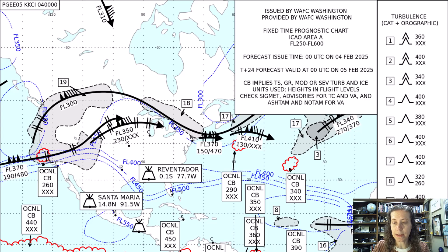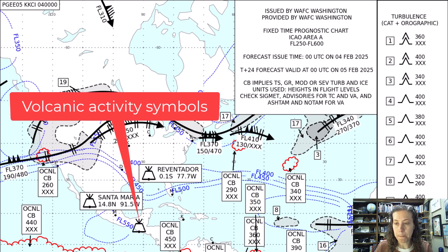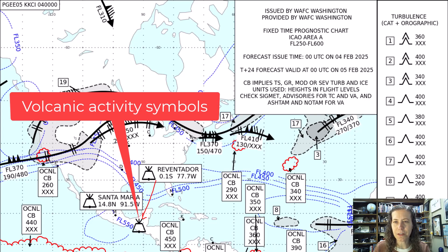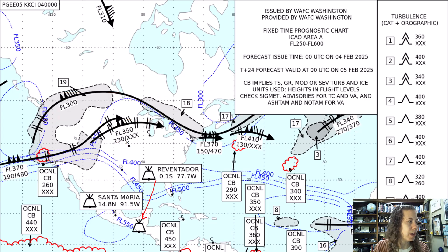Volcanic activity is still marked by small volcanic symbols on the chart, and you can match them up to the legend. It's a little unclear — some of them don't have an arrow pointing to a specific volcano — but that is what the volcanic activity symbols represent.